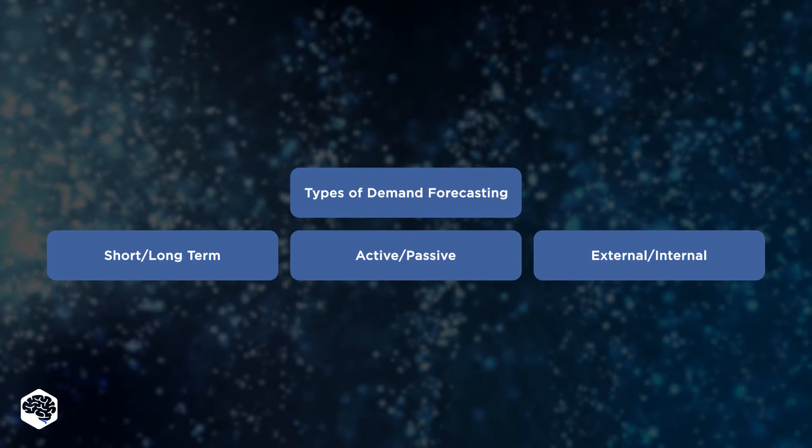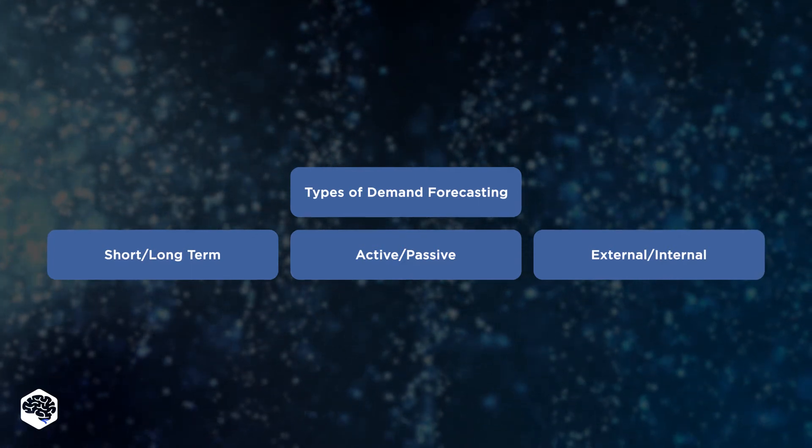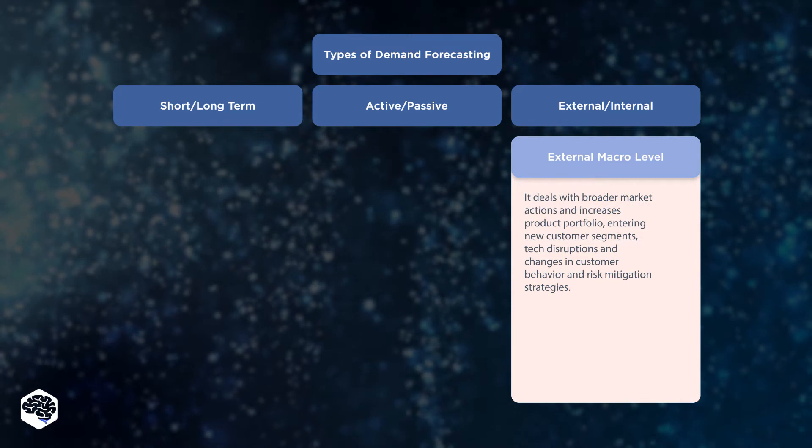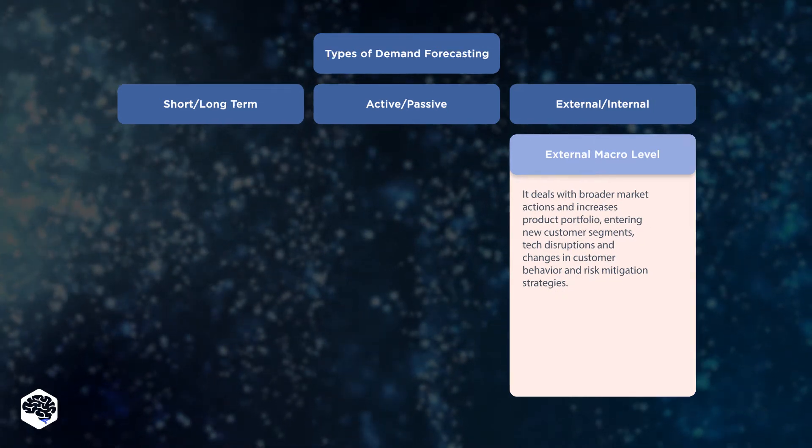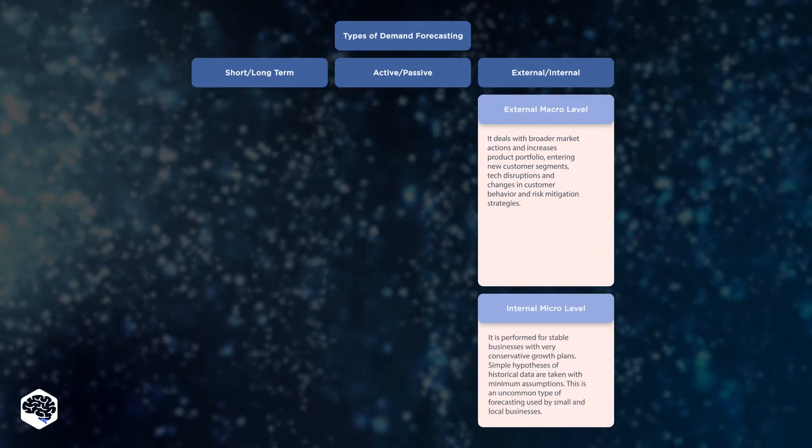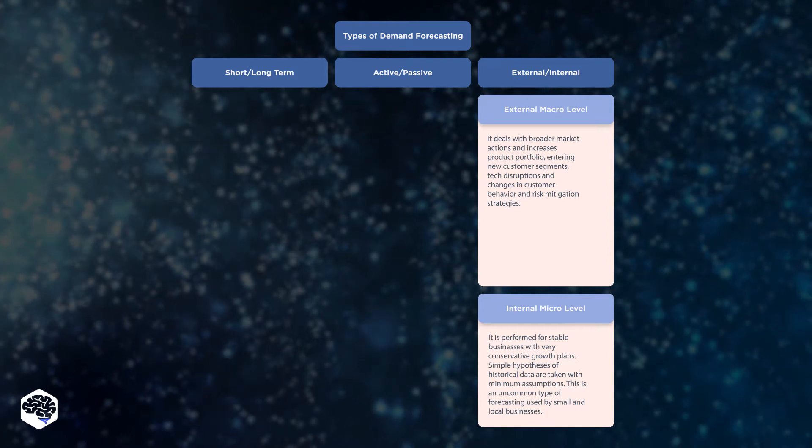Hence, we can define categories, among which are Macro level demand forecasting, which usually deals with broader market movements, while demand forecasting at the micro level can be specific to a particular business.